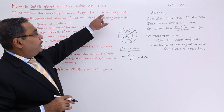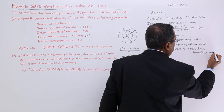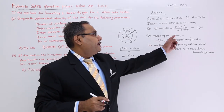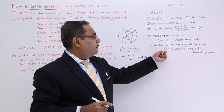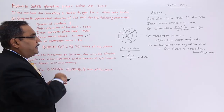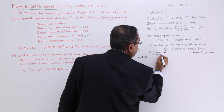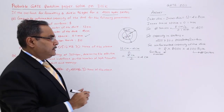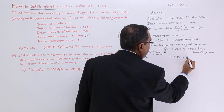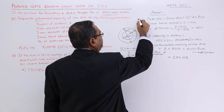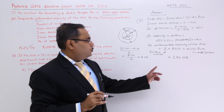We have 8000 sectors per surface. Number of surfaces is 8, and sector size is 4000 bytes. Computing this gives 256 MB, which is option A. That is the unformatted capacity of the disk — section A is solved with the answer 256 MB.